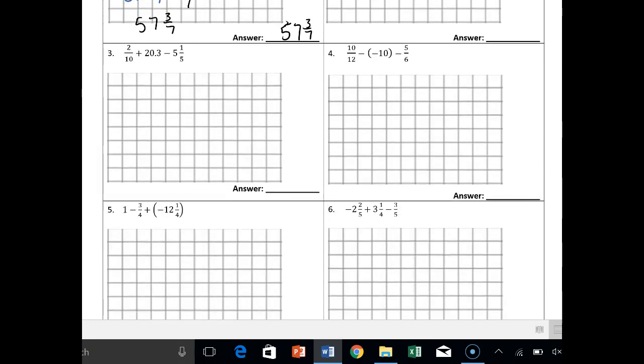Number 3, I have 2 tenths plus 20.3 minus, so I gotta change it to plus and negative 5 and 1 fifth. So right off the bat you may say hey I noticed that I can change my fifths into tenths, so let's try and do that by multiplying by 2 times 2 times 2.